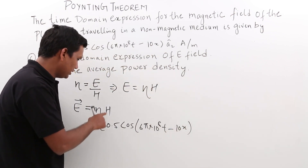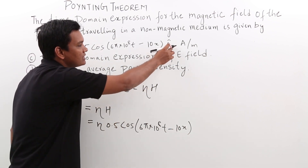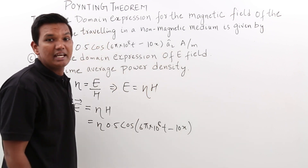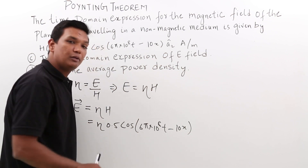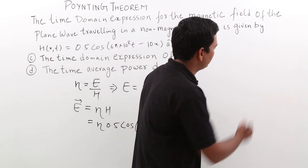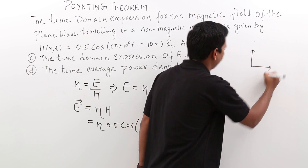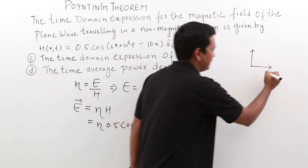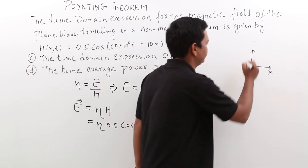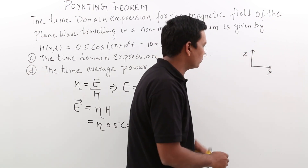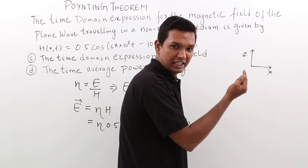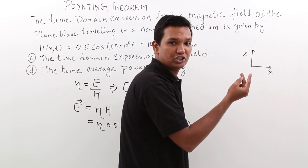The magnetic field variation is along the z direction and propagation is along the x direction. To find where the electric field is pointing, we use the right-hand rule. The thumb points in the direction of propagation (x axis), the forefinger points in the direction of the electric field, and the middle finger points in the direction of the magnetic field.